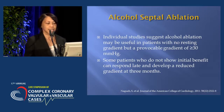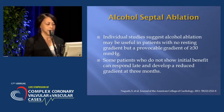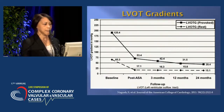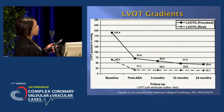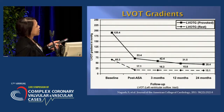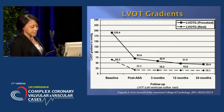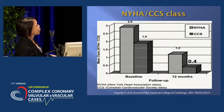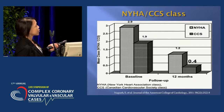Individual studies have suggested that alcohol ablation may be useful in patients with no resting gradient but a provocable gradient of greater than or equal to 30 millimeters. Some patients who do not show initial benefit can respond late and develop a reduced gradient at three months. The LVOT gradients show that initially the provoked and resting gradients are quite high, but immediately after the procedure there is a significant drop, and they continue to decline two years out. Symptom scores, including NYHA and Canadian Cardiovascular Society class, were significantly elevated at baseline but dropped dramatically by one year.